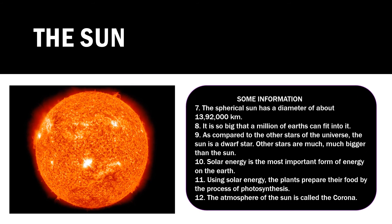The spherical sun has a diameter of about 1,392,000 kilometers. It is so big that a million earths can fit into it. But still, as compared to the other stars of the universe, the sun is a dwarf star. Other stars are much, much bigger than the sun.